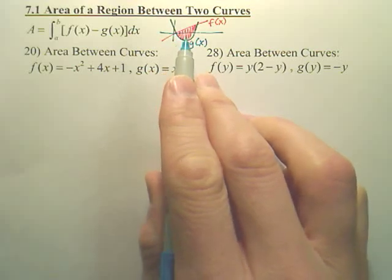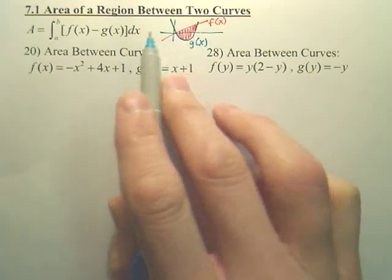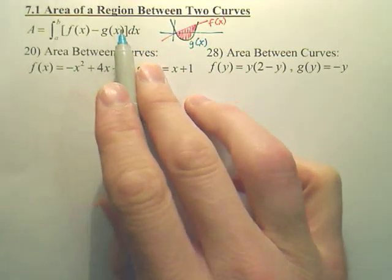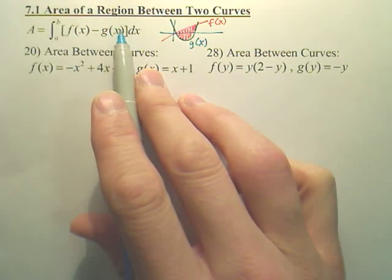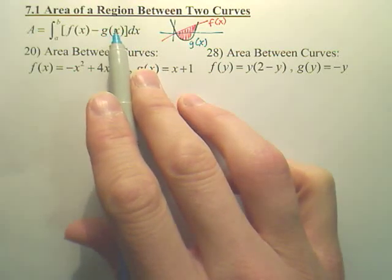If I want to find the area between two curves, you're always going to take f minus g because you're taking the area of f of x minus the area of g of x. You can think of it as two separate integrals, but it's easier to write it as one.